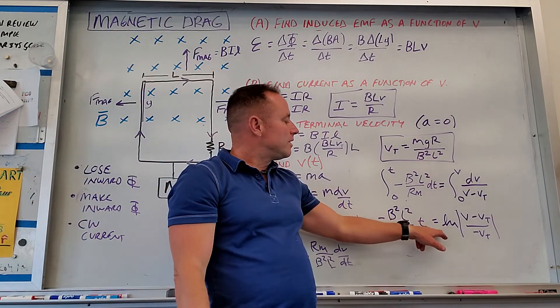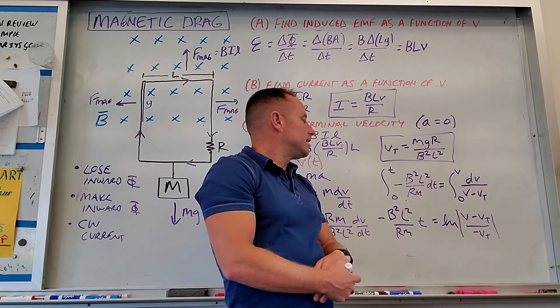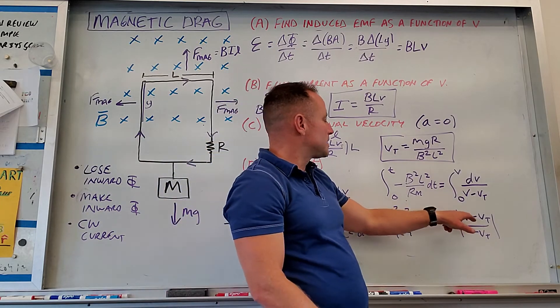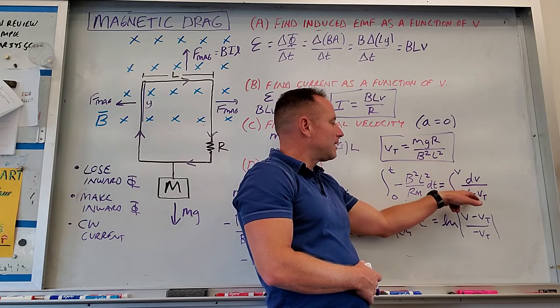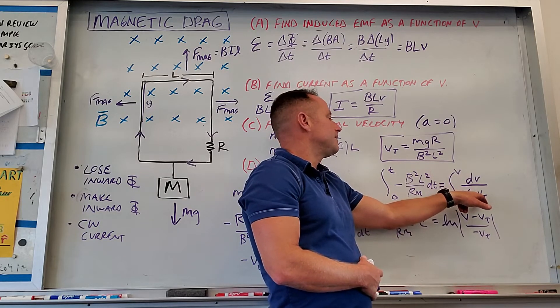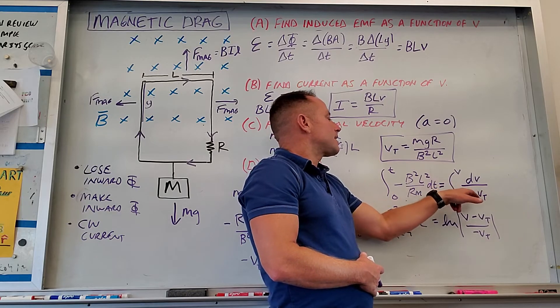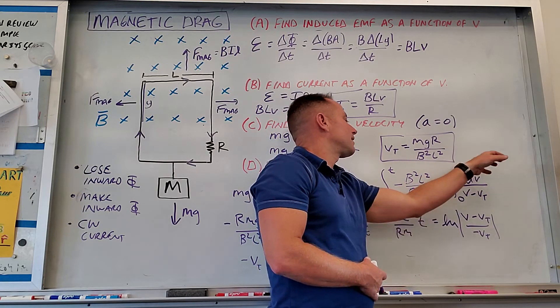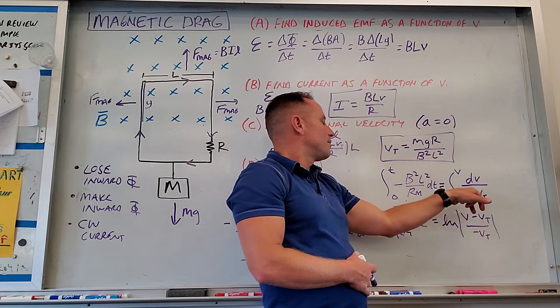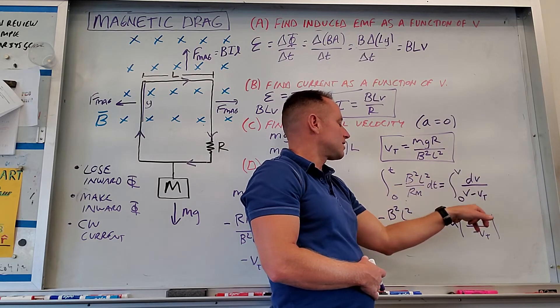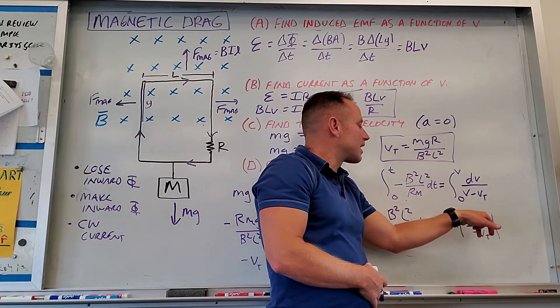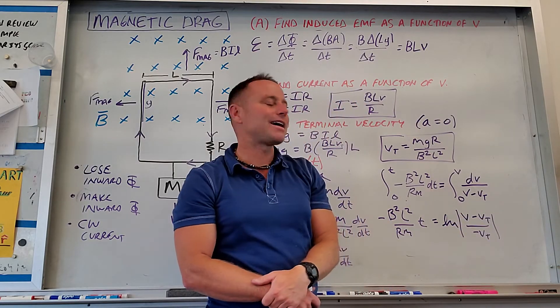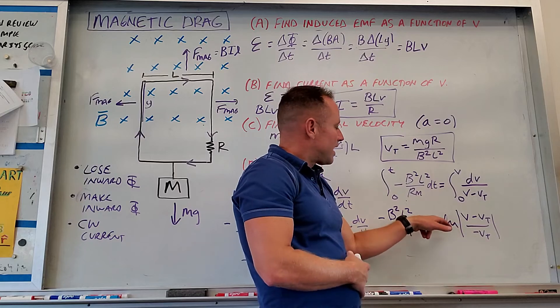What we need to do now is solve for the V. By the way, in case people missed it, this integrates to Ln of V minus Vt. So you get Ln V minus Vt, then minus Ln of minus Vt. But when you have log of a thing minus log of a thing, that's log of the first thing over the second thing. So I've kind of maybe skipped a line of algebra there.